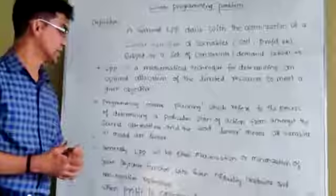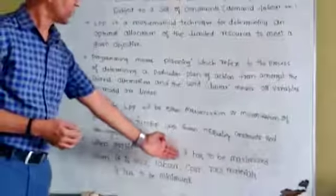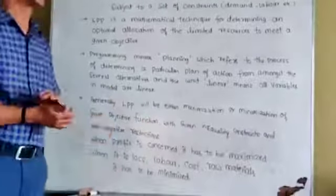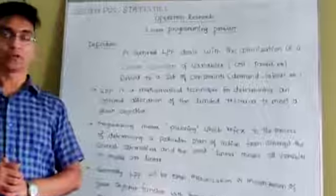When profit is concerned, it has to be maximized. When it is loss, labor, cost, or raw materials, it has to be minimized. In general, we have only two types of objective functions. When it is profit, everybody wants more profit or yield.